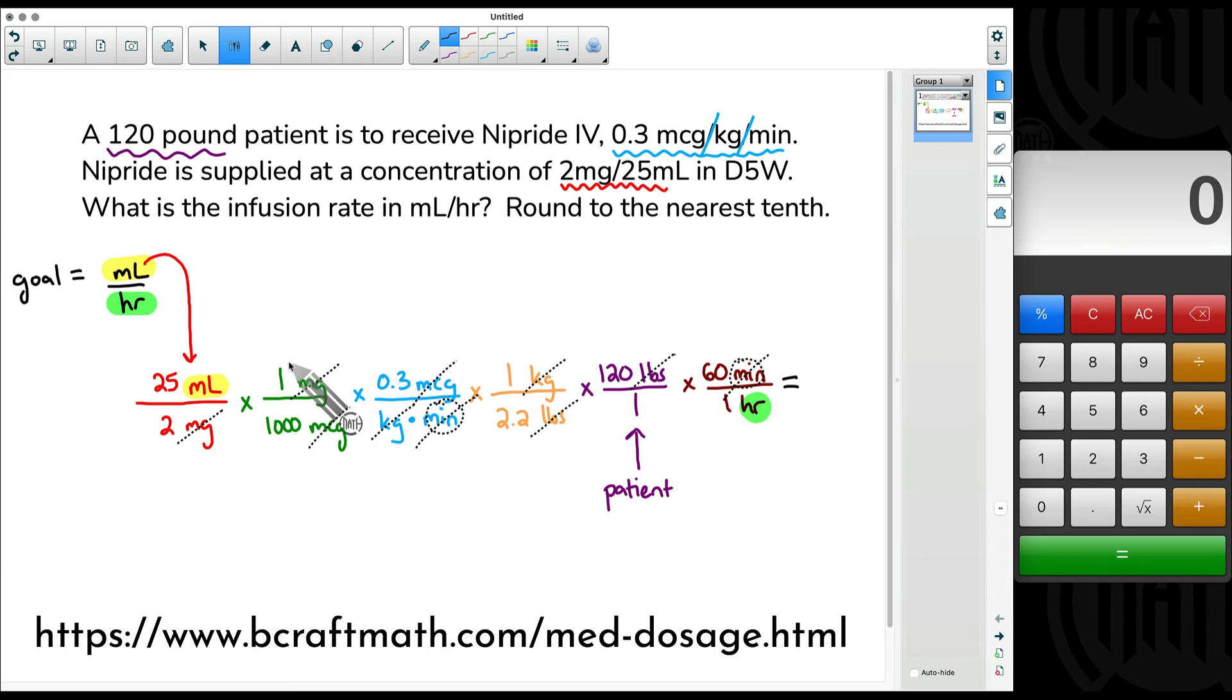And not only that, these ones like here, here, here, this 1, this is 1 kilogram, this is 1 minute. Anytime we have a 1, we don't need to type that in. That's a waste of time. Multiplying by 1, dividing by 1 doesn't change the value. So skip all of the ones, but let's still multiply the other ones. So I'm going to multiply my top numbers 25 times 0.3 times 120 times 60.